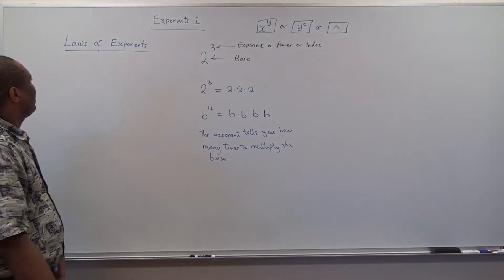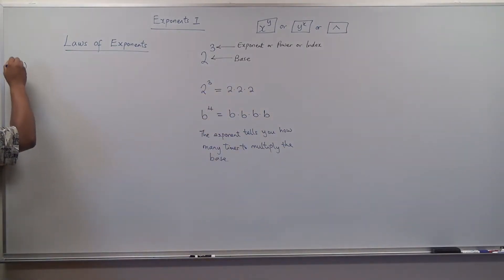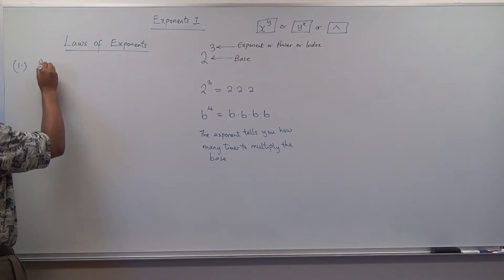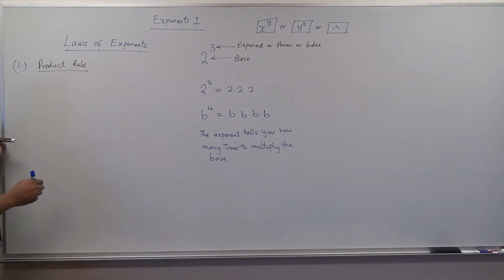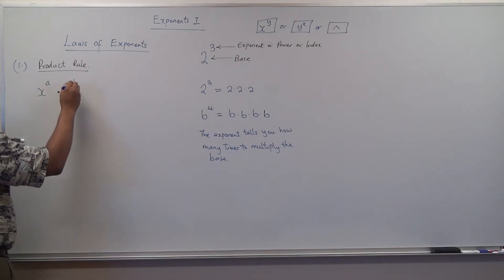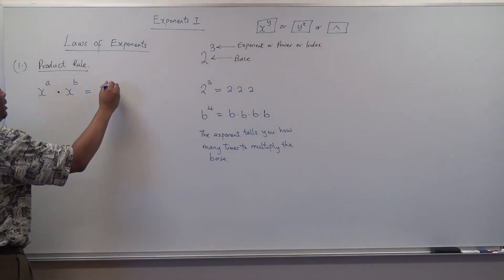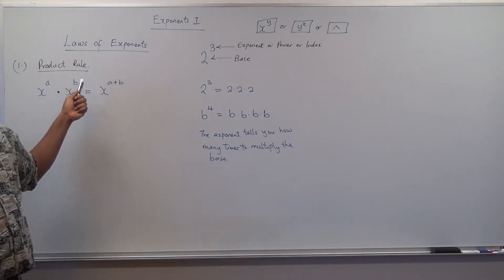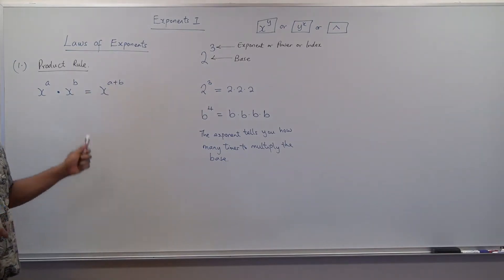Now let's go ahead and look at some laws of exponents. The first one we have is what we call the product rule. Here, when we have the same base — it must be the same base — like if we have x raised to power a multiplied by x raised to power b, this is going to give us one base brought down and then you add the exponents. You must have the same base, and whether they have different or same exponents, you bring out the common base and add the exponents.